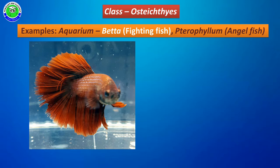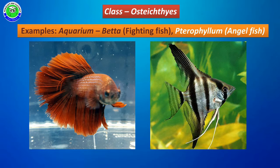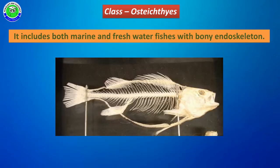Some fishes belonging to Osteichthyes are maintained in aquariums, like Betta, also called the fighting fish, and Pterophyllum, also called the angel fish. These are aquarium fishes and are examples of Osteichthyes members.